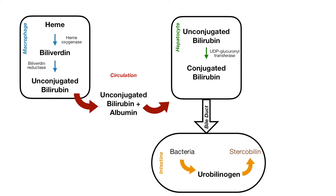In the intestine, there are a series of conversions and steps that take place. To summarize briefly: with the help of bacterial enzymes, conjugated bilirubin is converted into urobilinogen. The majority of this is excreted into the feces as stercobilin, which has a brownish pigment that gives feces its brownish color. A small amount of urobilinogen is reabsorbed by the intestine and returned to the liver where it undergoes reconjugation and re-excretion into the intestine — known as enterohepatic circulation.